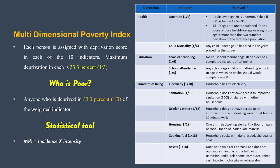Each of the three dimensions carries a weight of 33.3 percent across the 10 indicators. The education dimension has two indicators: years of schooling and school attendance. A household where a member aged 10 or older has not completed six years of schooling is considered deprived. For school attendance, if any child has not attended school up to the age of eight, the household is considered deprived.